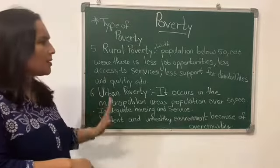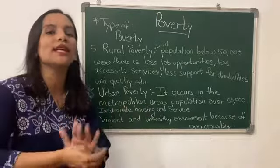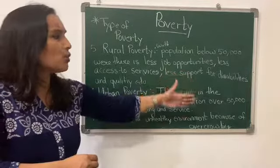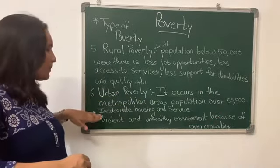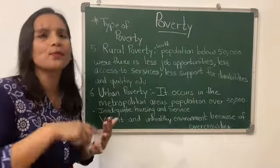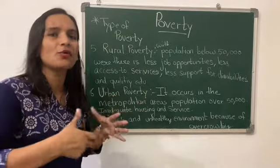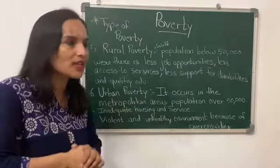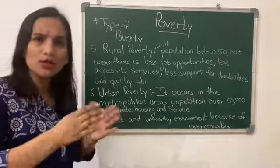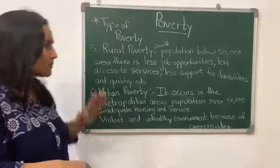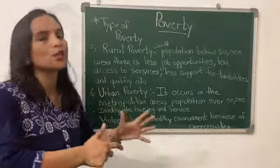Number six is urban poverty. In urban areas where the population is over 50,000, there are poverty areas where there is no proper housing or services available. These areas are overcrowded, with a lot of poverty and an unhealthy environment caused largely by overcrowding.